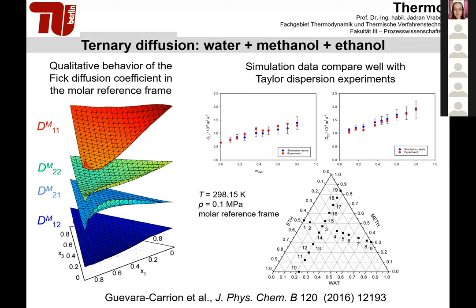Going from binaries to ternaries: there was no experimental data for any of the four ternary subsystems. In a joint work with Valentina Shevtsova we studied the ternary water plus methanol plus ethanol, and the comparison between simulation and experiment is quite good across two different paths through the composition plane. The Fick diffusion matrix elements for this ternary mixture show a clearly non-trivial behavior.